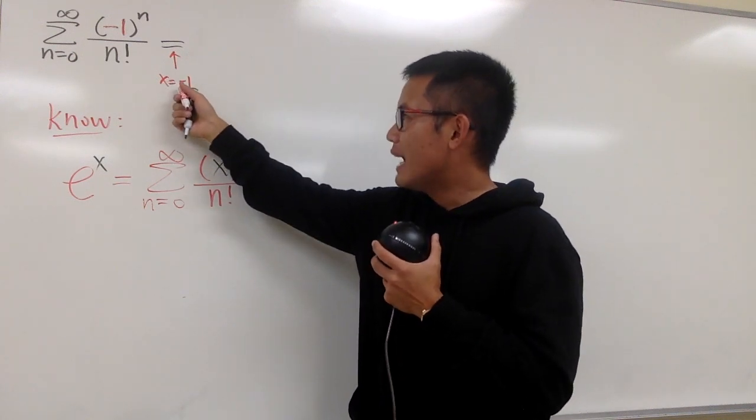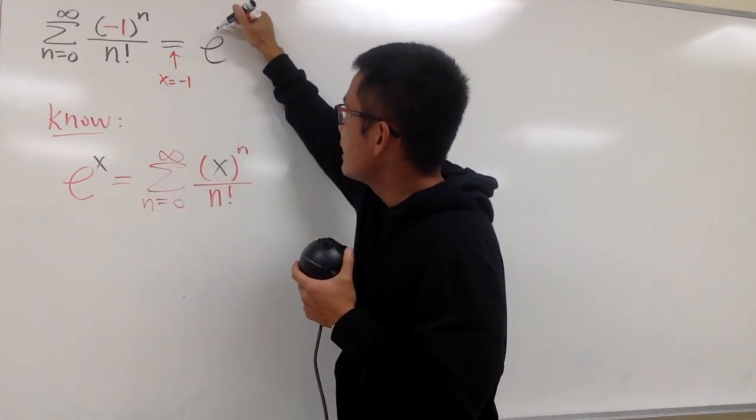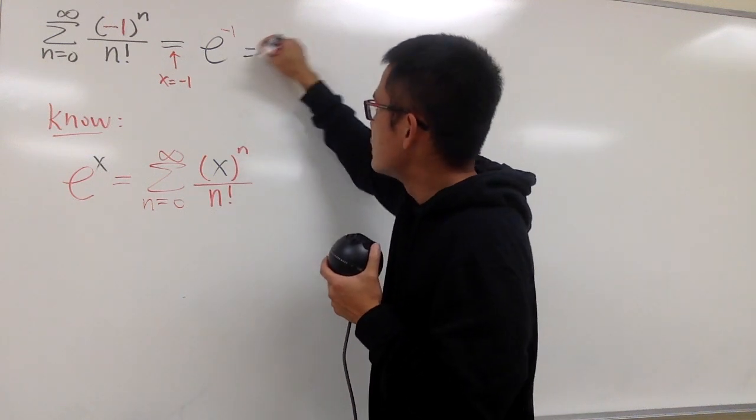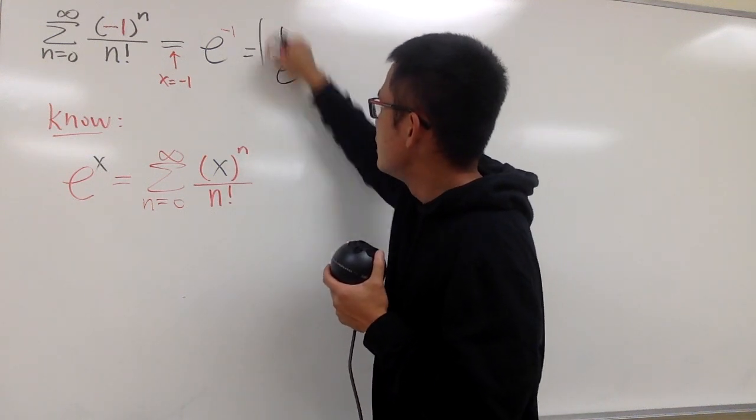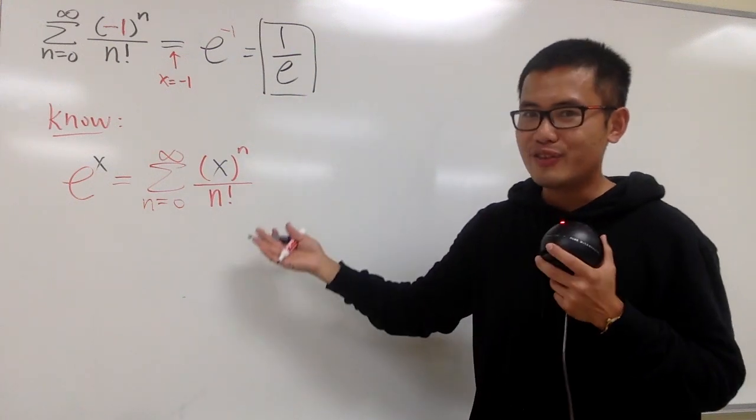So all we have to do is plug in negative 1 into this x, and we will end up with e to the negative 1 power. And if you want to be a little bit fancy, you can write this down as 1 over e. And this right here is it, another of my good friends. That's it.